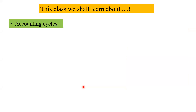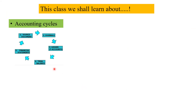In this class we are going to learn about the accounting cycle. First is the source document — it is an evidence, it can be a bill, a receipt, invoice, or cash voucher. After that we enter everything into a book called a journal. From the journal we segregate the data and write it again in a separate book called a ledger. From the ledger we make a trial balance, and from the trial balance we make a financial statement.